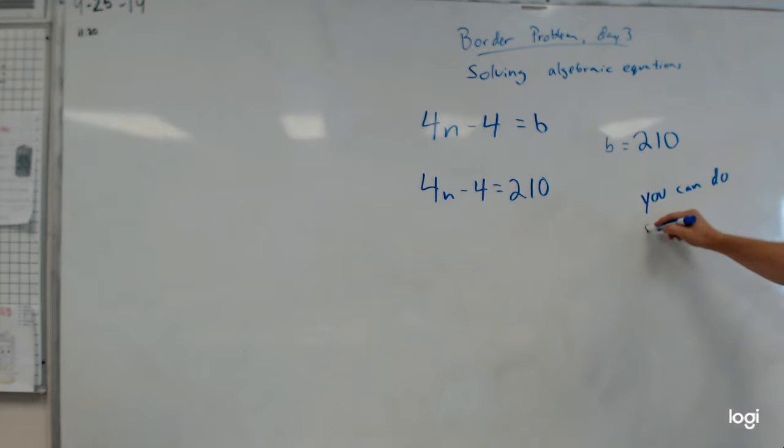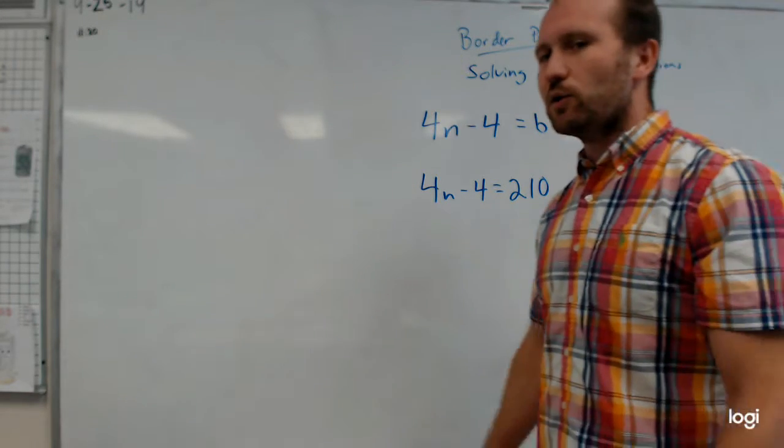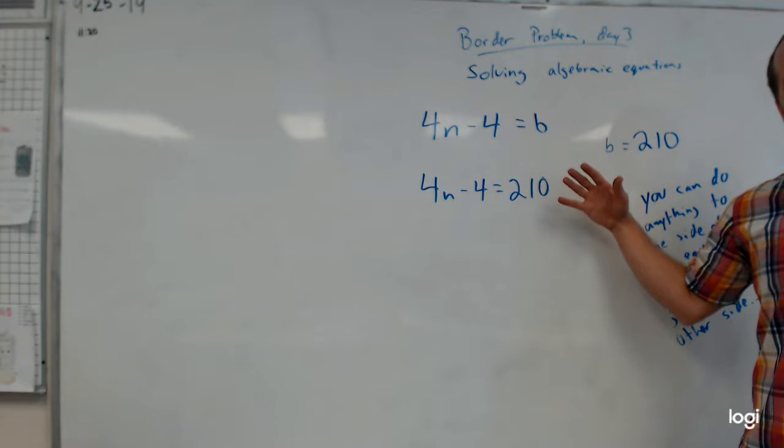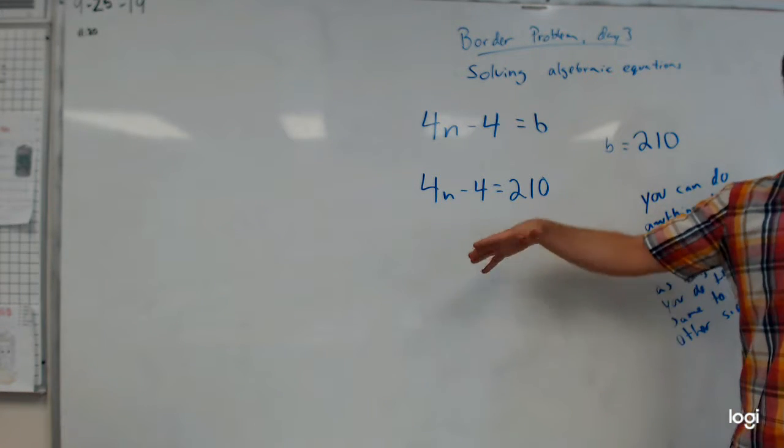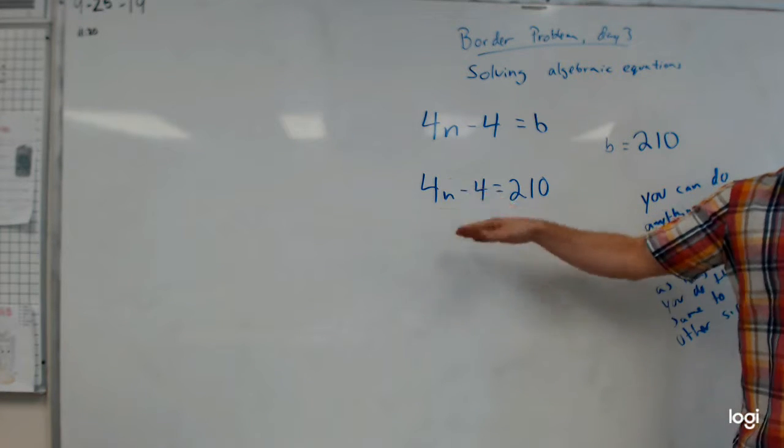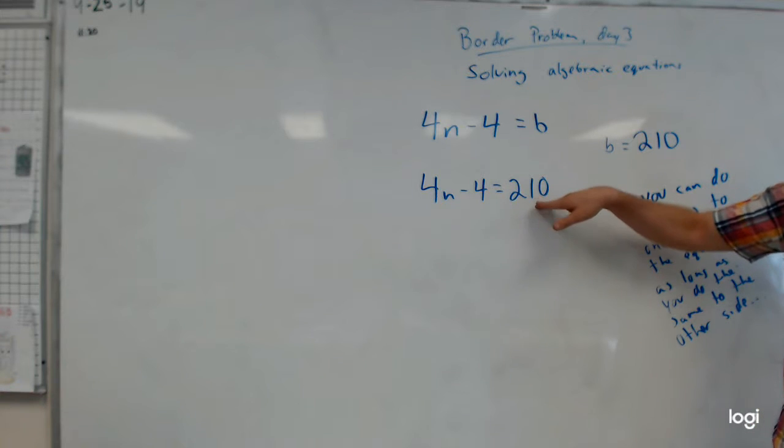And sometimes we call this like the golden rule of algebra. But the way that we can solve equations is this: You can do anything to one side of this equation as long as what? You do it to the other side. You do it to the other side. So technically this is like a property of equality which basically says if I add something to one side of the equation, I still have an equation as long as I add it to the other side. If I subtract, I still have an equation as long as I subtract. If I multiply, I still have an equation as long as I multiply. If I divide, if I take the square root, if I square it, if I add it to itself, I still have an equation as long as I do the same thing to the other side.